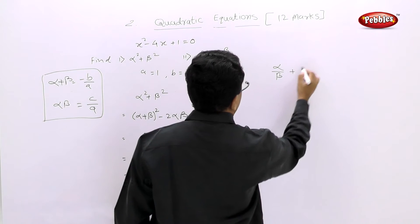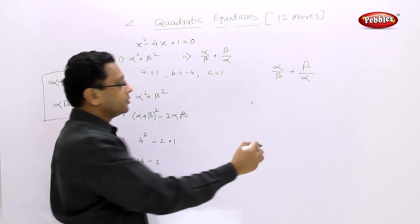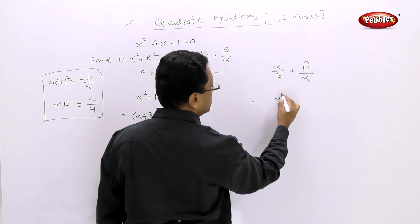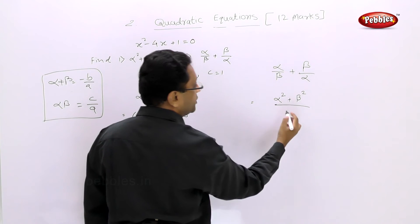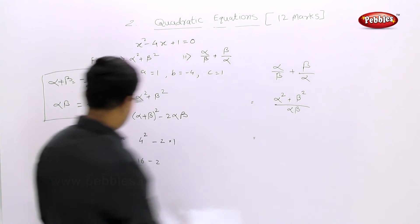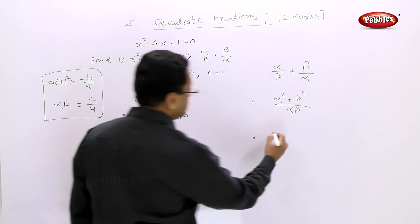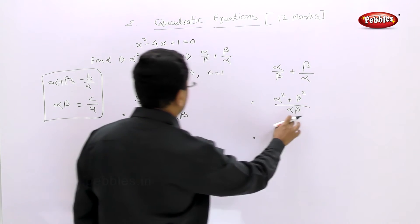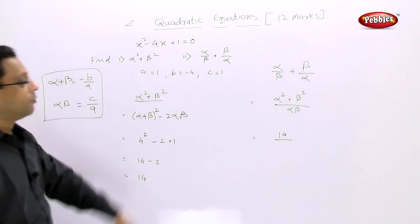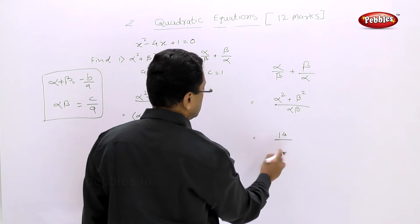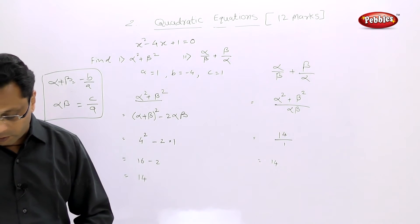For alpha/beta + beta/alpha, we simplify by cross multiplication to get (alpha² + beta²) / (alpha × beta). We already found alpha² + beta² = 14, and alpha × beta = c/a = 1/1 = 1. So the result is 14/1 = 14. Both values are 14.